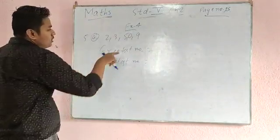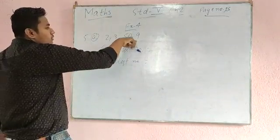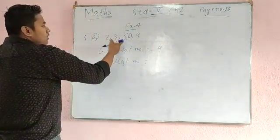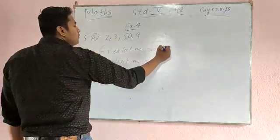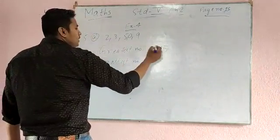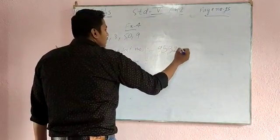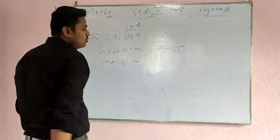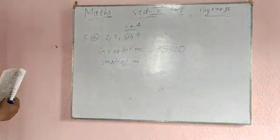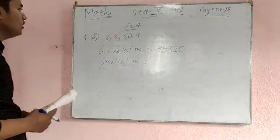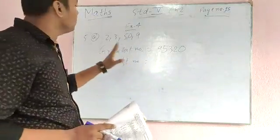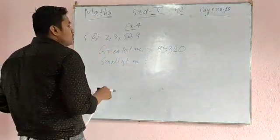So first write the greatest number. The first digit of the greatest number is 9. Now after 9 there is 5, after that 3, then 2, and last 0. So 95320 — that is your greatest number.